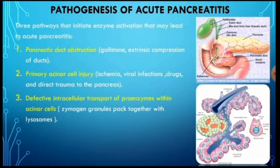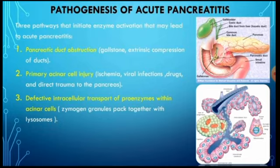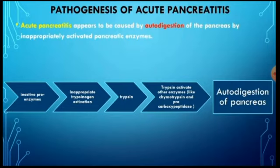There are three pathways that initiate enzyme activation leading to acute pancreatitis. Number one: pancreatic duct obstruction, possibly by a gallstone or extrinsic compression. Number two: primary acinar cell injury, possibly by ischemia, viral infection, drugs, or direct trauma. Number three: defective intracellular transport of proenzymes within the acinar cell, where zymogen granules pack together with lysosomes. Acute pancreatitis is caused by autodigestion through inappropriate activation of trypsinogen to trypsin, which then activates other enzymes like chymotrypsin and procarboxypeptidase, leading to autodigestion.